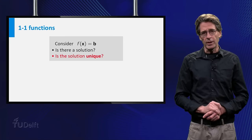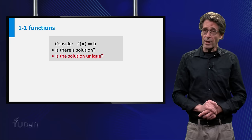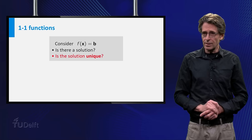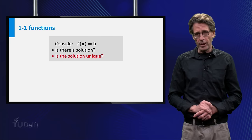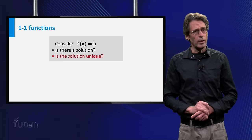If there is a solution, the next question is whether it is unique. If the solution to f of x equals b is indeed unique for all elements b in the range, then we say that f is 1 to 1, or injective.